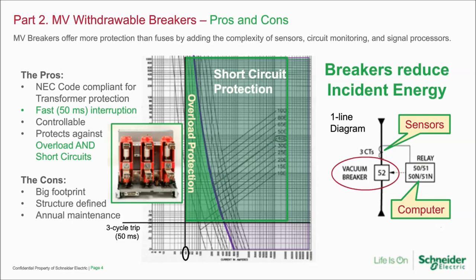The great benefit to breakers is that they address the limitation of fuses in the overload protection area. Looking at the graph, the horizontal line where it says three-cycle trip at 50 milliseconds is key. In a breaker system, the breaker movement itself happens much faster than 50 milliseconds — it only takes about half the time. But the system includes sensors, relays, relay program latency, and the breaker itself. All of that actuates in 50 milliseconds including the latency of the relay reading. Regardless of the amperage, we always trip at 50 milliseconds — totally dependent on a set point in the relay.